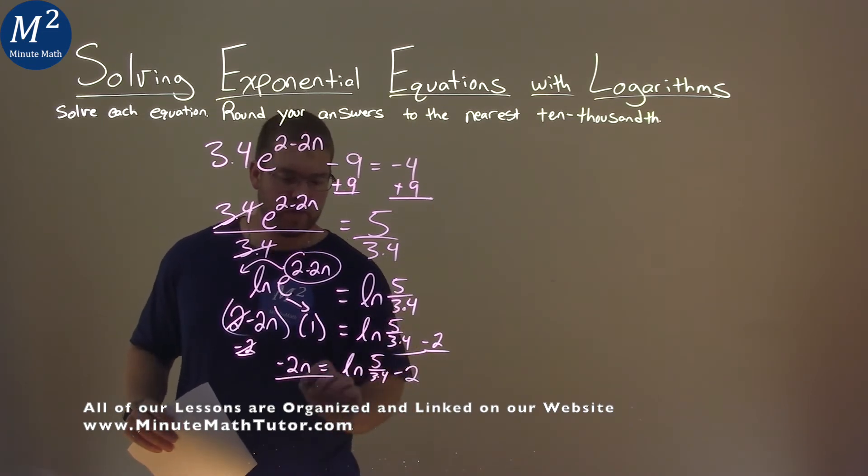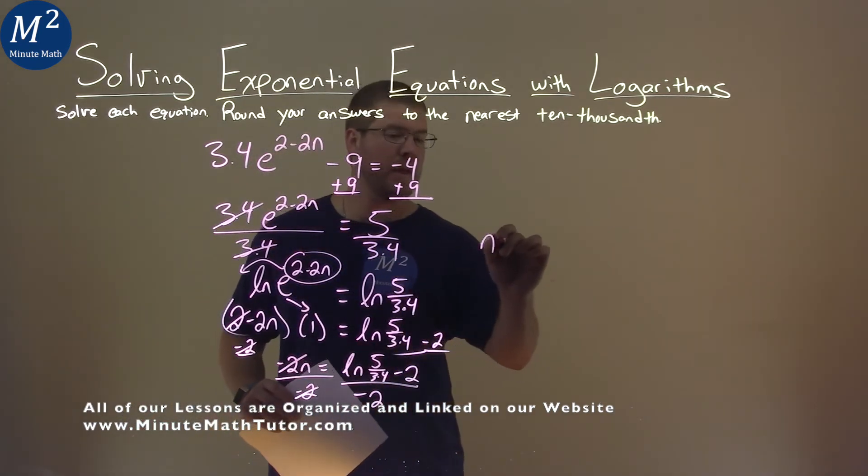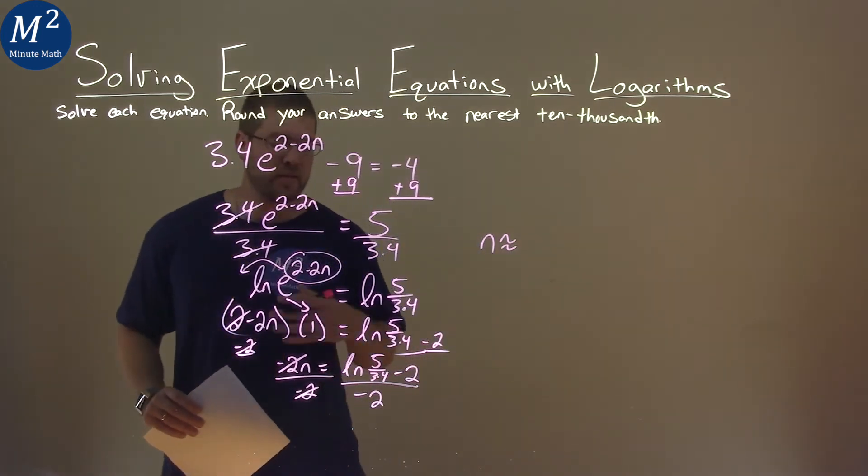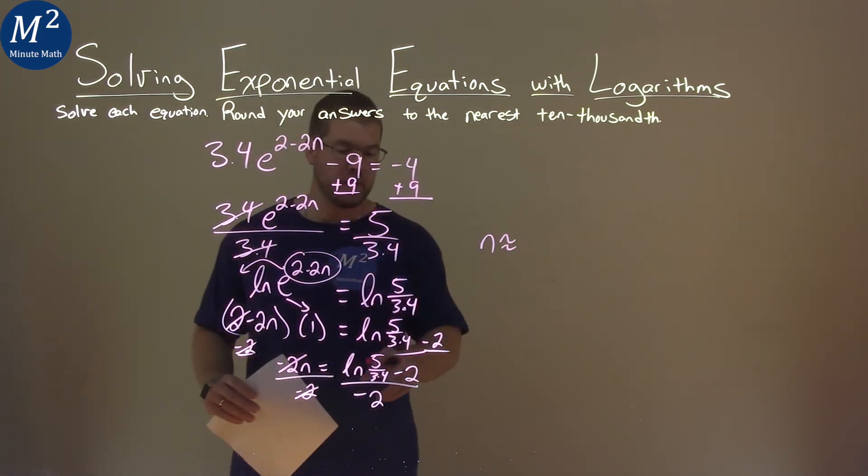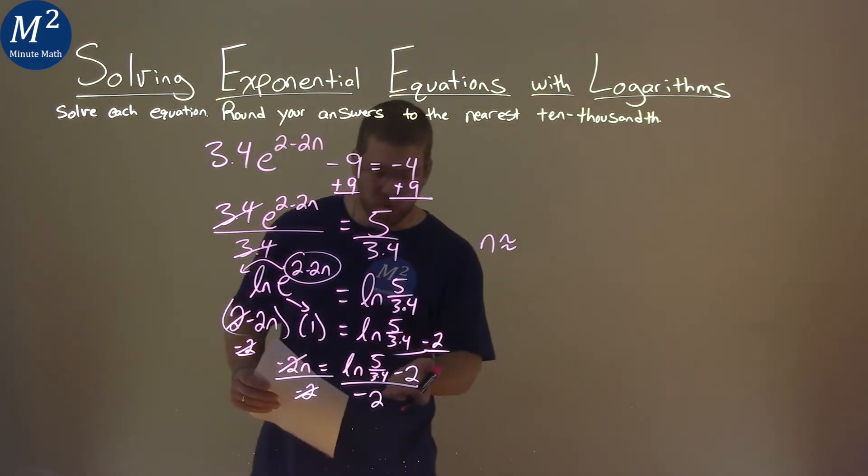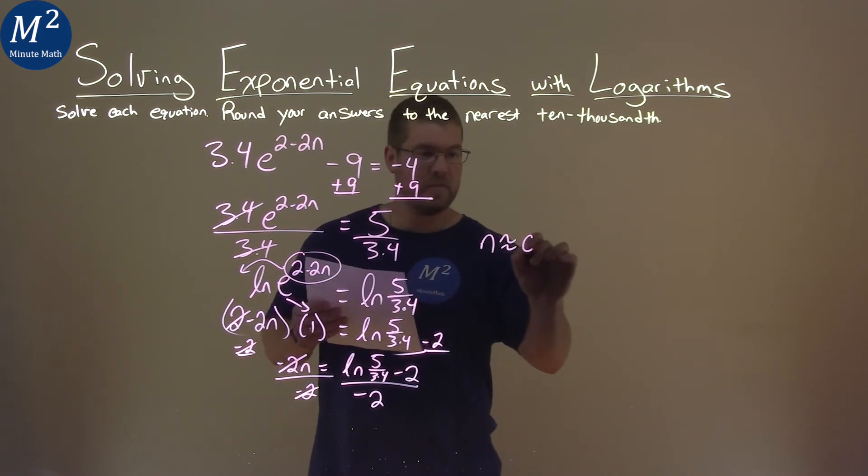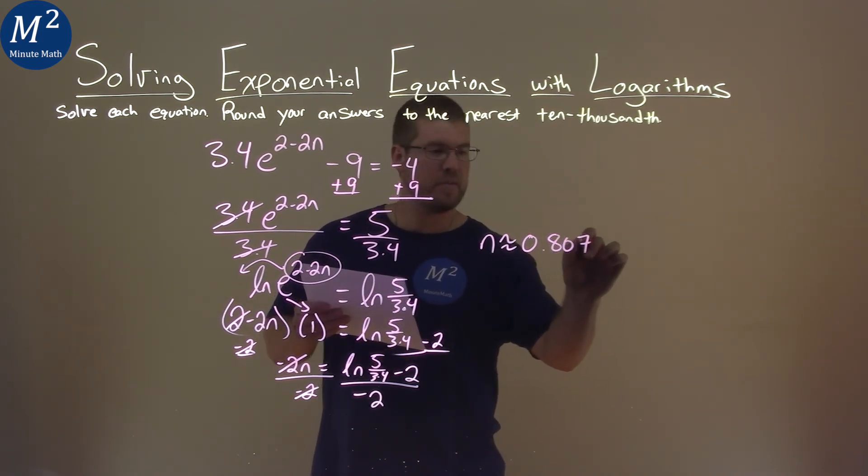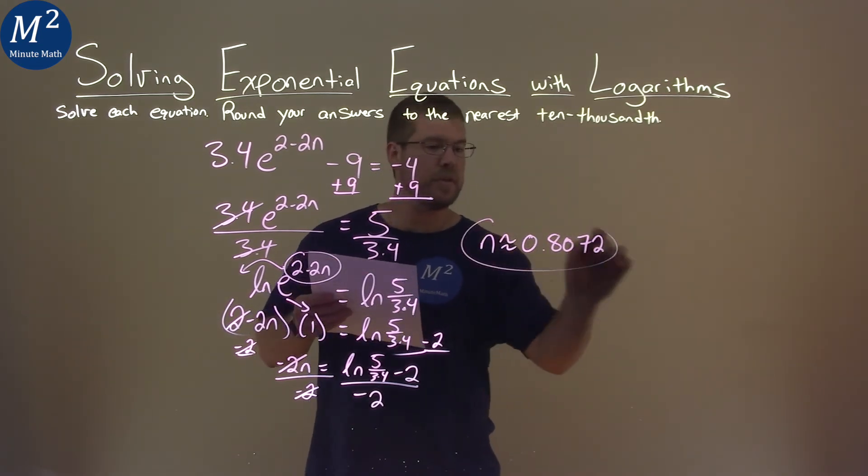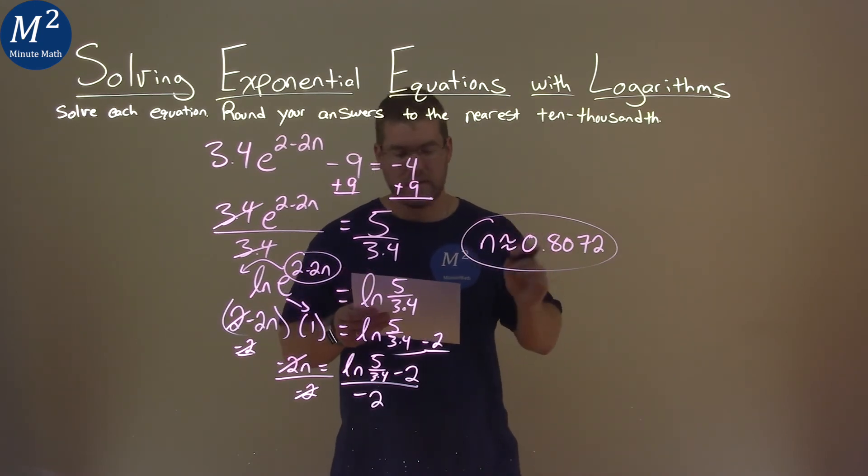From there, I divide both sides by a negative 2. The negative 2s cancel here. And what does that give us? I'll write it up here. n is approximately, and this is where I do the calculations with my calculator. Natural log of 5 divided by 3.4 minus 2 all over a negative 2, and that comes out to be approximately 0.8072. And so, our final answer here is n is approximately equal to 0.8072.